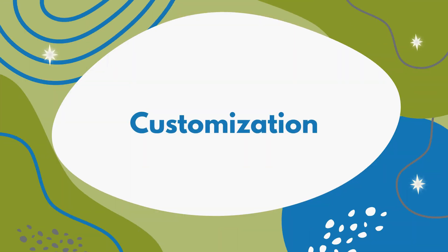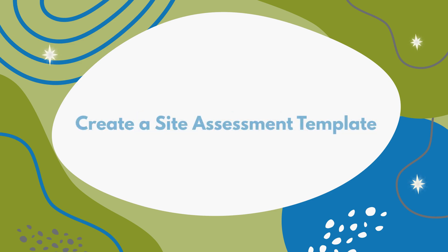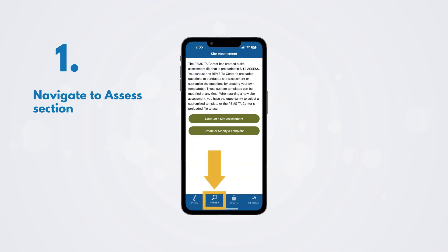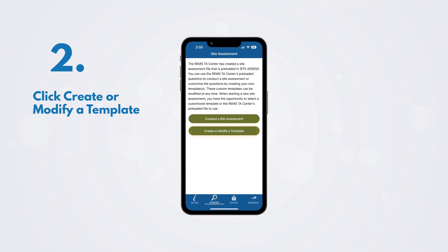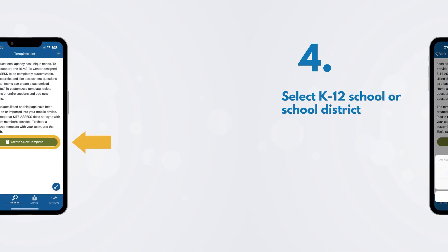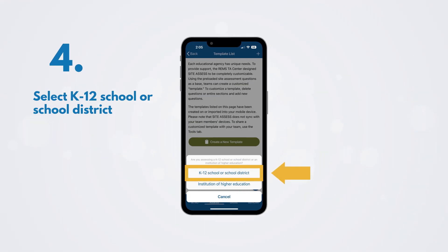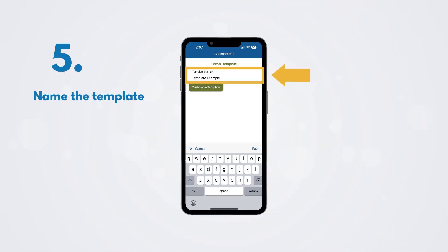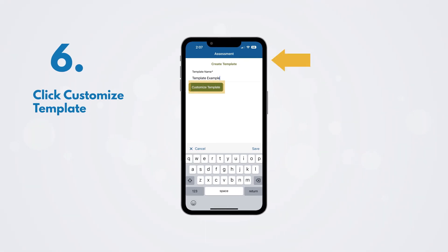The mobile app was designed to be customized by various education agencies across the country. We recommend that you accomplish this by creating a site assessment template. Navigate to the Assess section. Click Create or Modify a Template. Click Create a New Template. Select K-12 school or school district. Name the template. Click Customize Template.